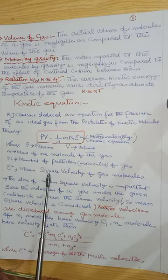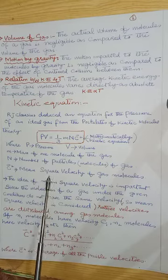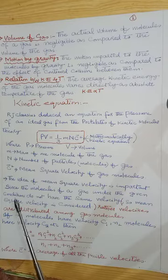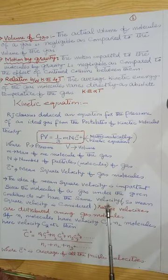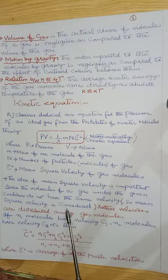c̄² is the mean square velocity of gas molecules. Since the molecules of a gas under given conditions do not all have the same velocity, mean square velocity is considered.